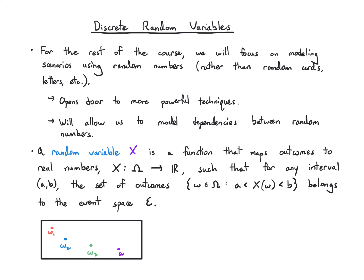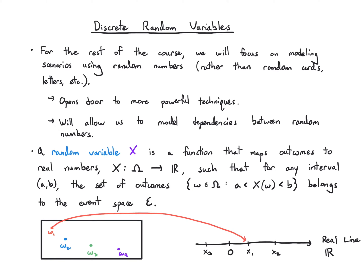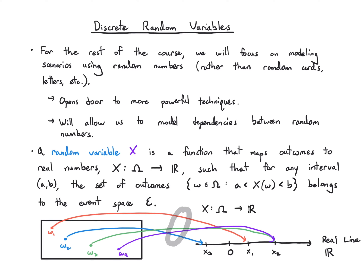Let's visualize this. I have a bunch of outcomes and a real line, and all I'm doing is mapping them to some numbers. So here ω₁ went to x₁, which is a positive number. Ω₂ went to x₃, ω₃ went to x₂, and ω₄ went to x₂. We don't need to preserve any order that existed in the sample space, and you can map multiple things to the same number — that's fine.